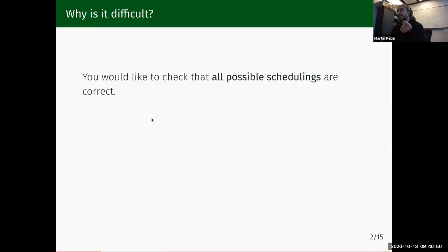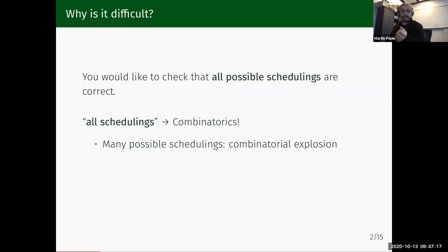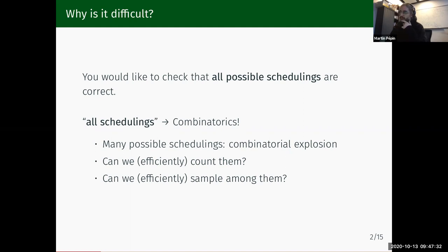When you want to check that the program is correct, you have to check that all possible schedulings are correct. Considering all possible schedulings is typically a combinatorial problem. In reality, there are a huge number of possible schedulings — we call that a combinatorial explosion, or in concurrency it's called state explosion. In general, this is impractical to test all possible schedulings and people have to resort to other tricks to verify their programs.